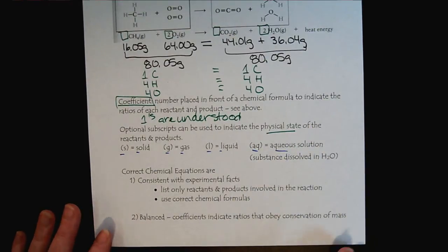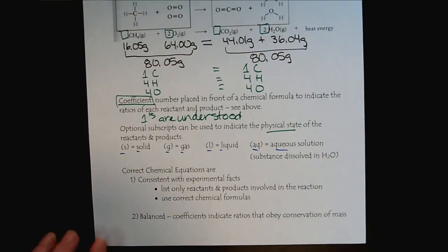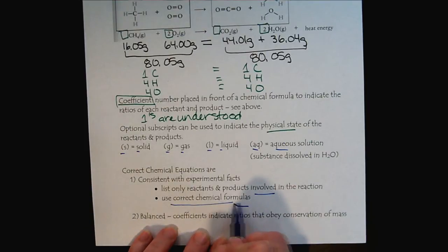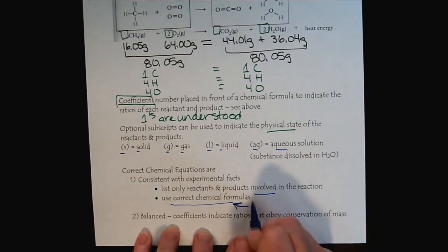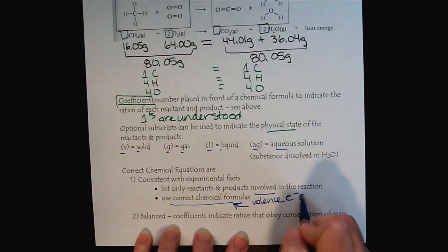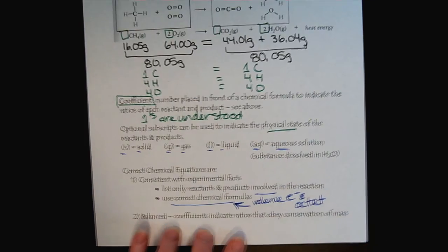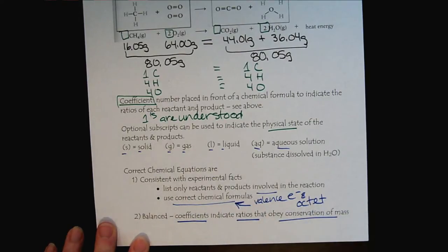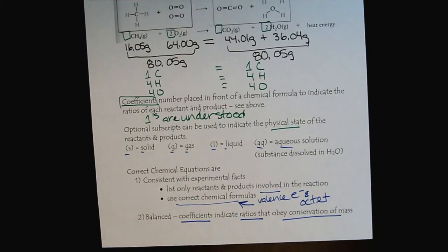The rules for a correct chemical equation are very straightforward. It has to be consistent with the experimental facts. We're only going to list reactants and products if they're actually involved in the reaction, and we always have to use the correct chemical formula. The chemical formulas come from the valence electrons and the octet rule, so we don't have the freedom to change that. To balance, we focus on the coefficients. The coefficients give us the ratios, and we must obey the conservation of mass.